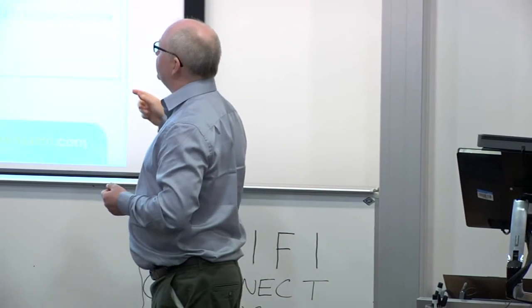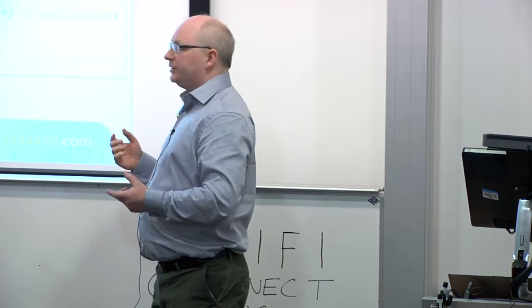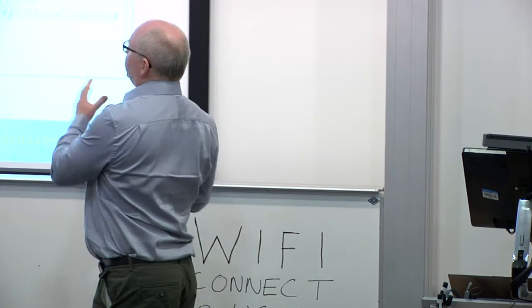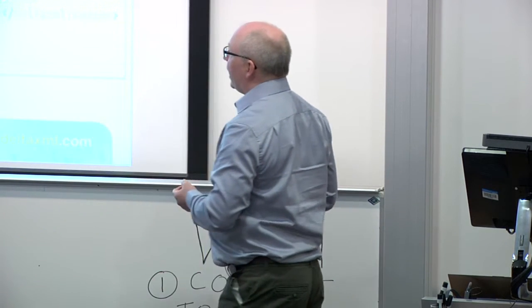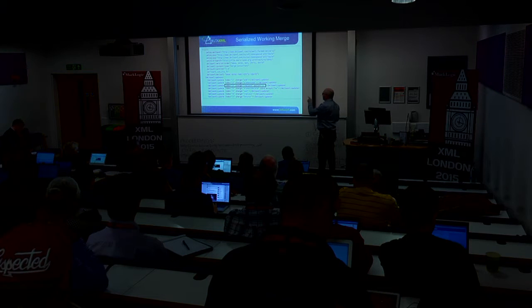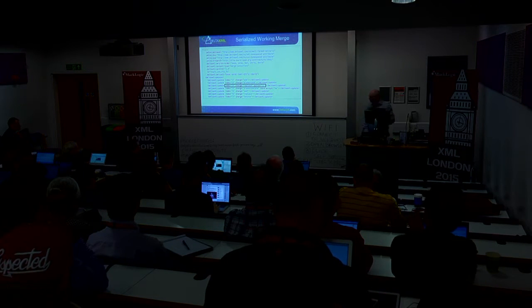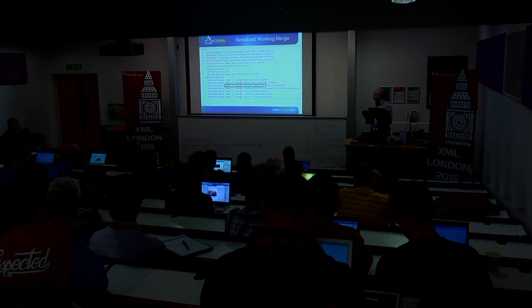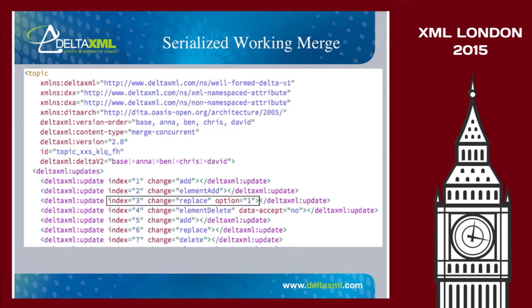When you serialise the working merge, all those changes highlighted in the change list are embedded back into the merge document. That's how it's stored, giving you a record of those changes, with added descriptions for each change.